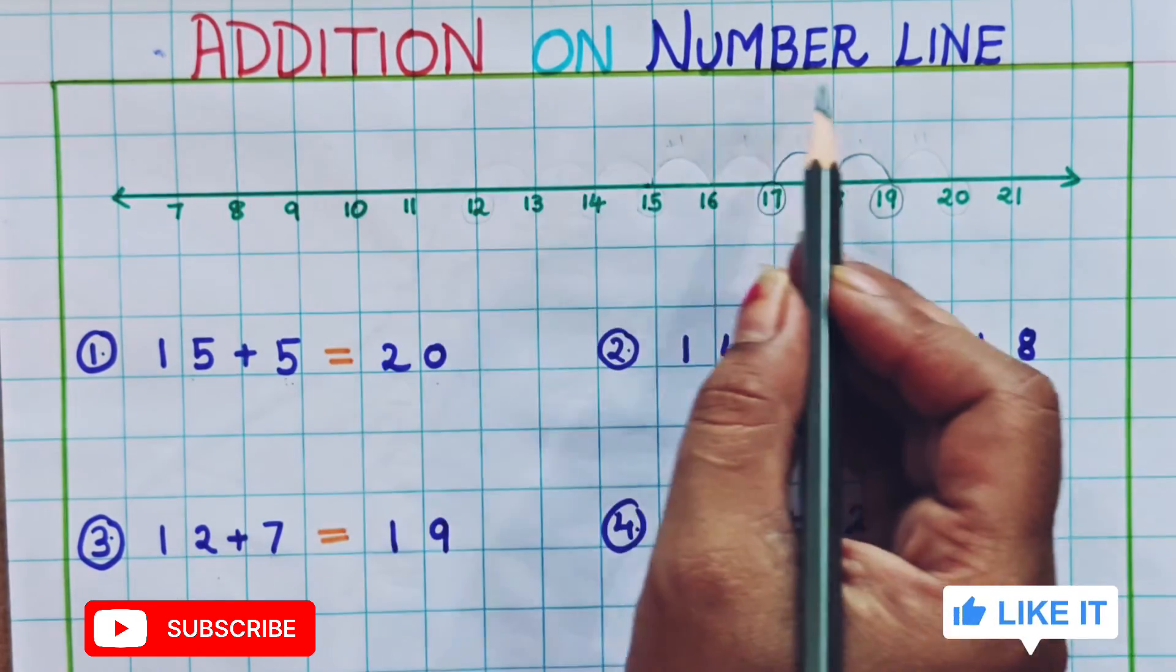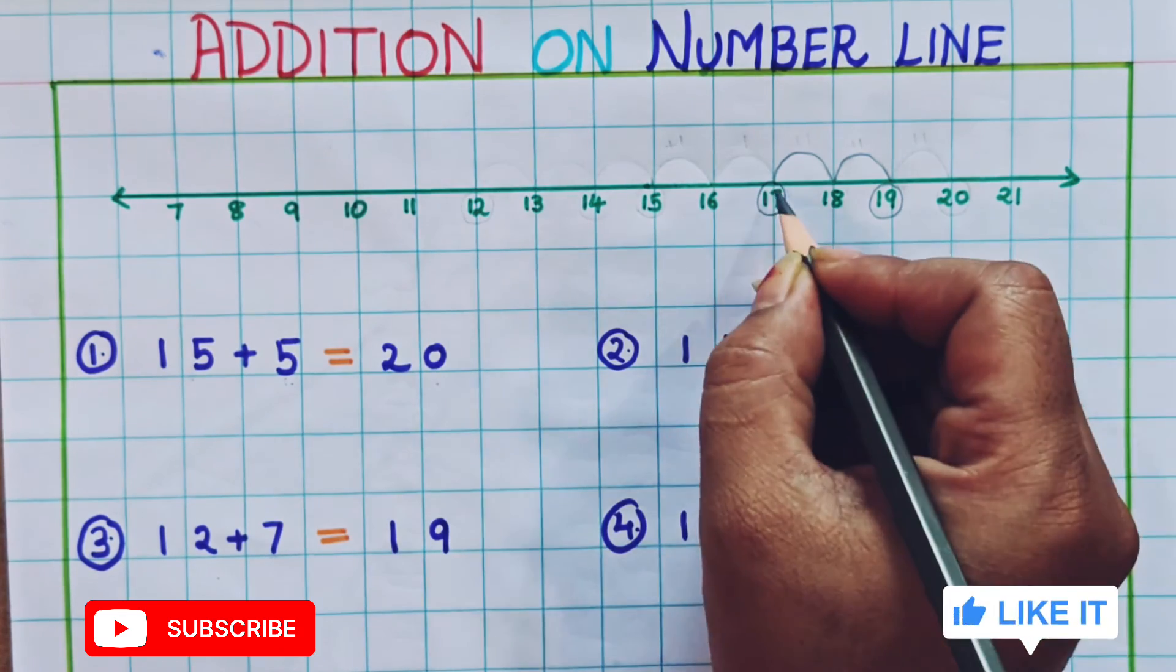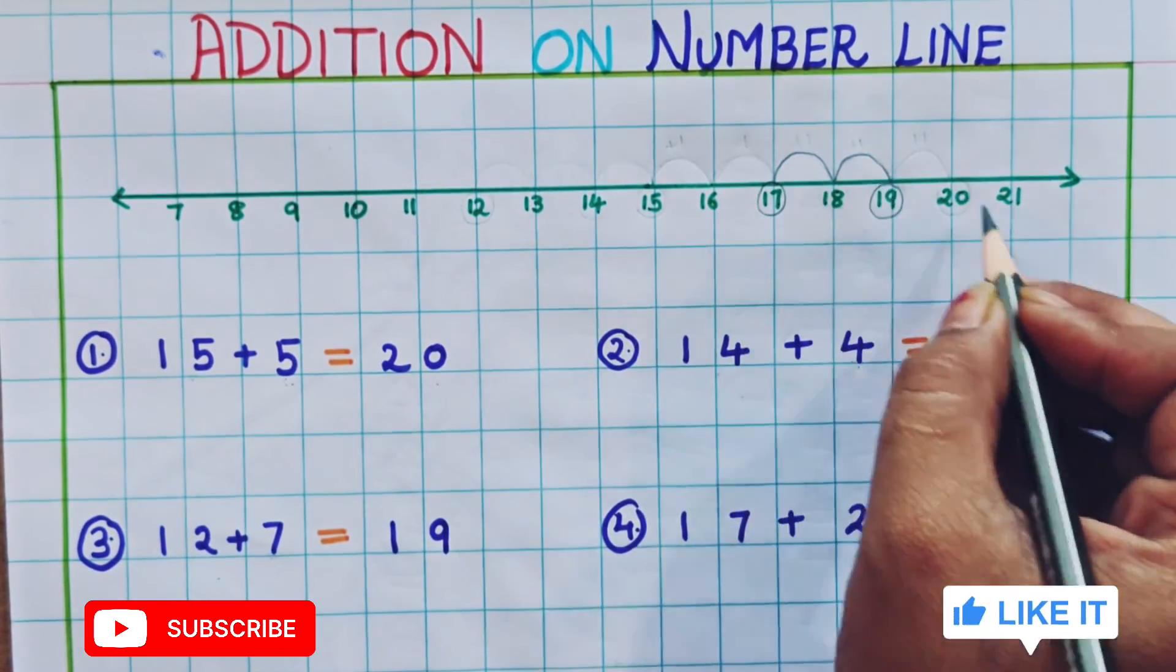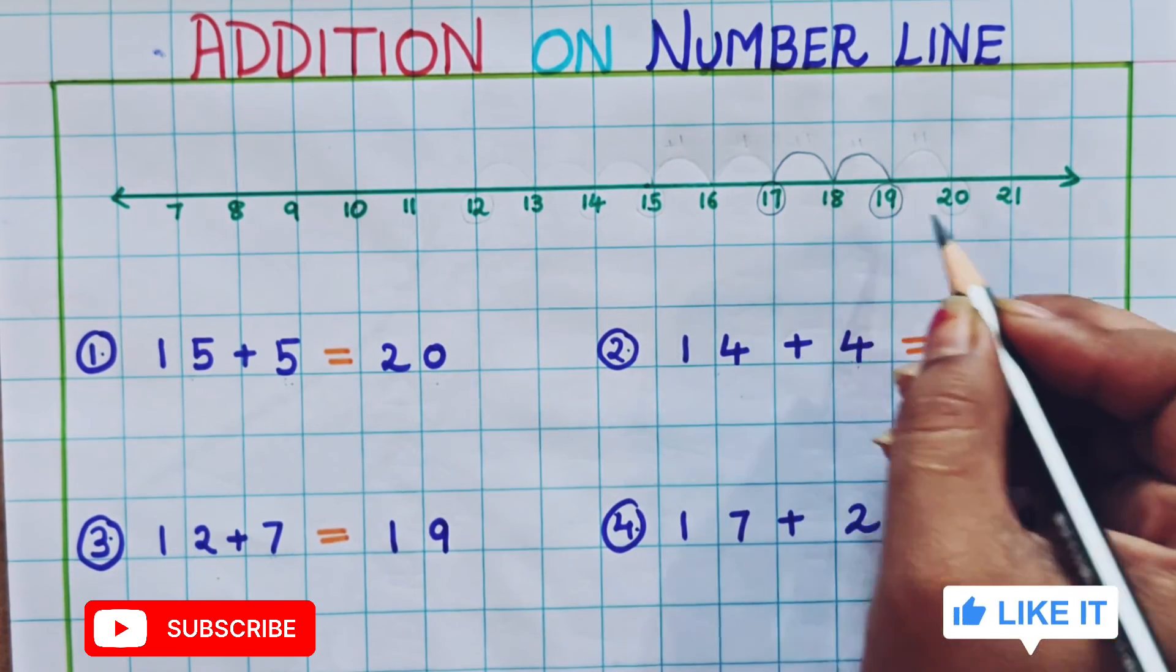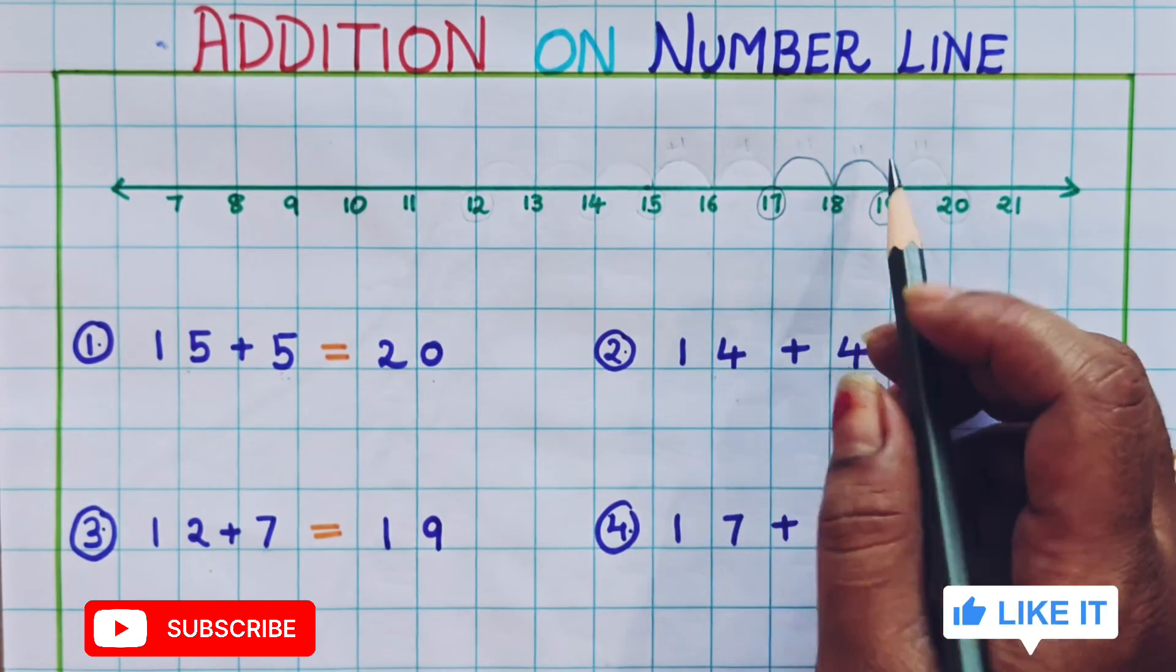So this is the addition of number line. We are going to represent it in such way. Whatever number is given, just circle that number. Then see how many steps forward we have to move. And then see whatever number we are getting. That is the answer. I hope the addition of number line is clear to you.